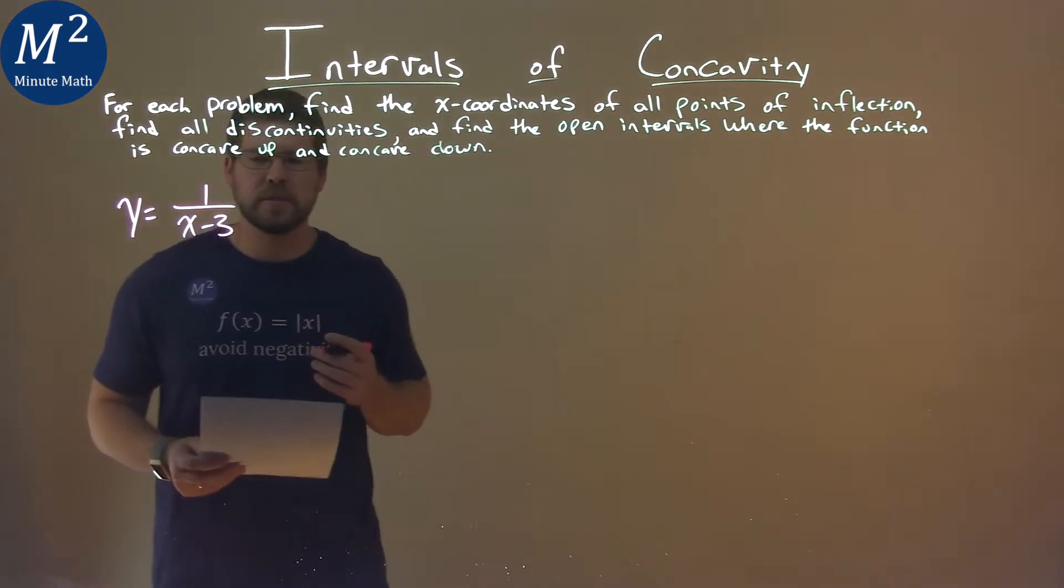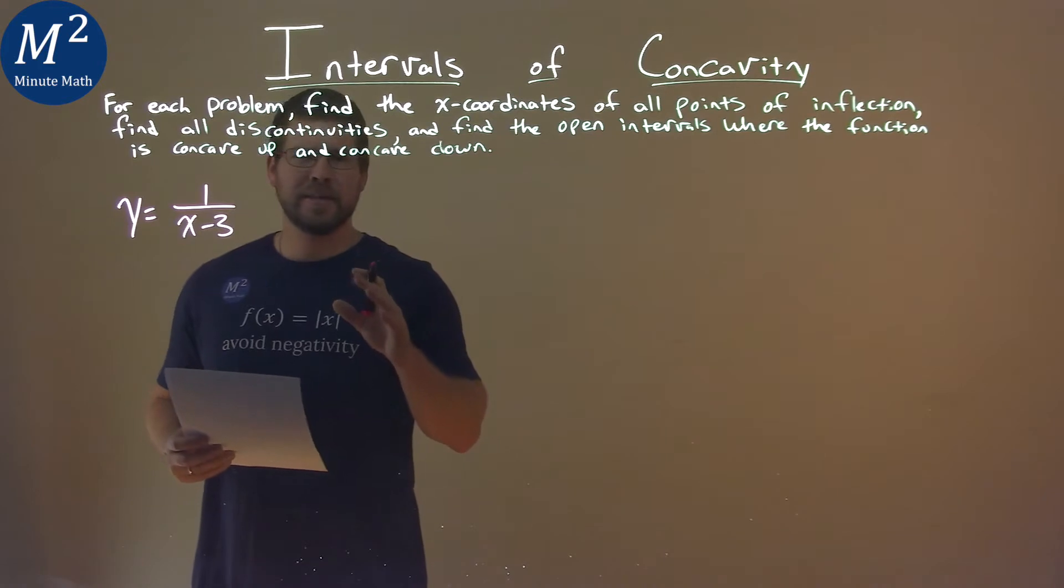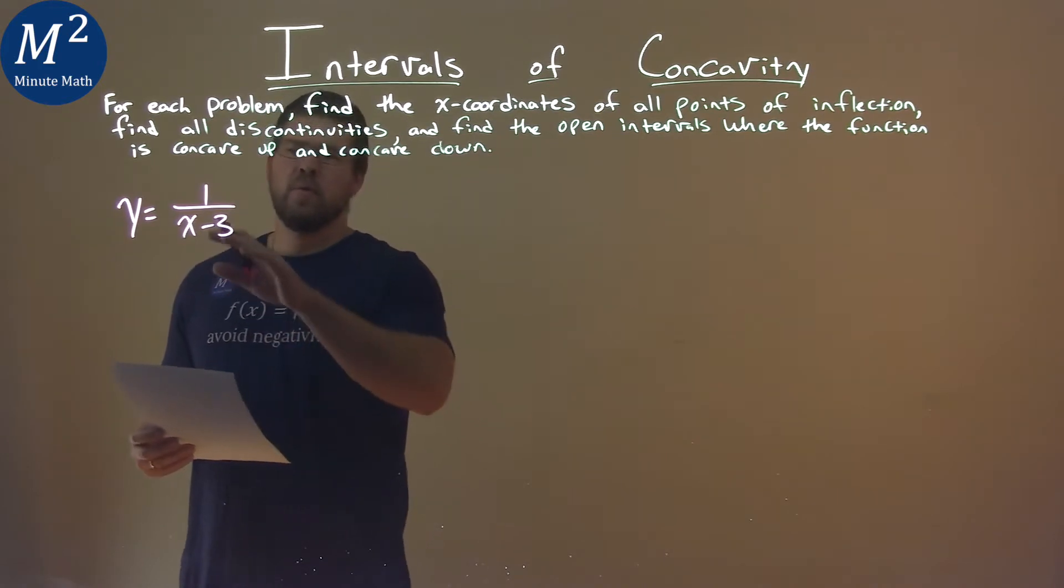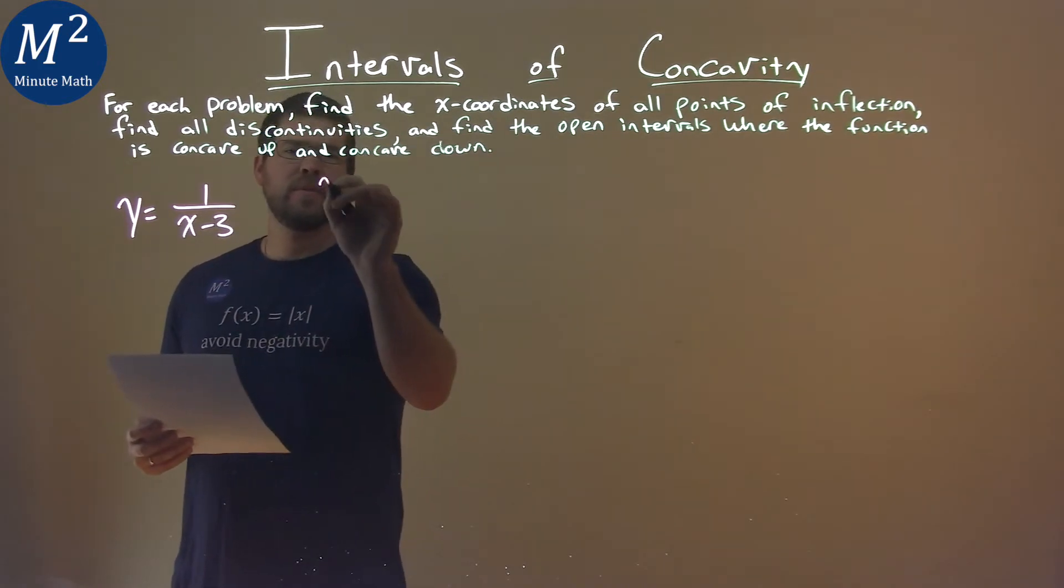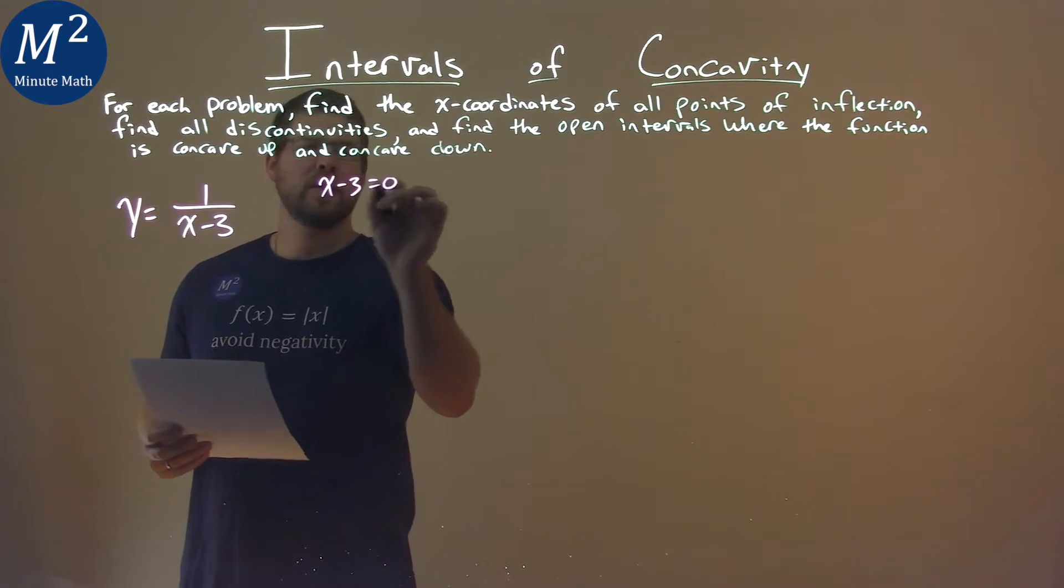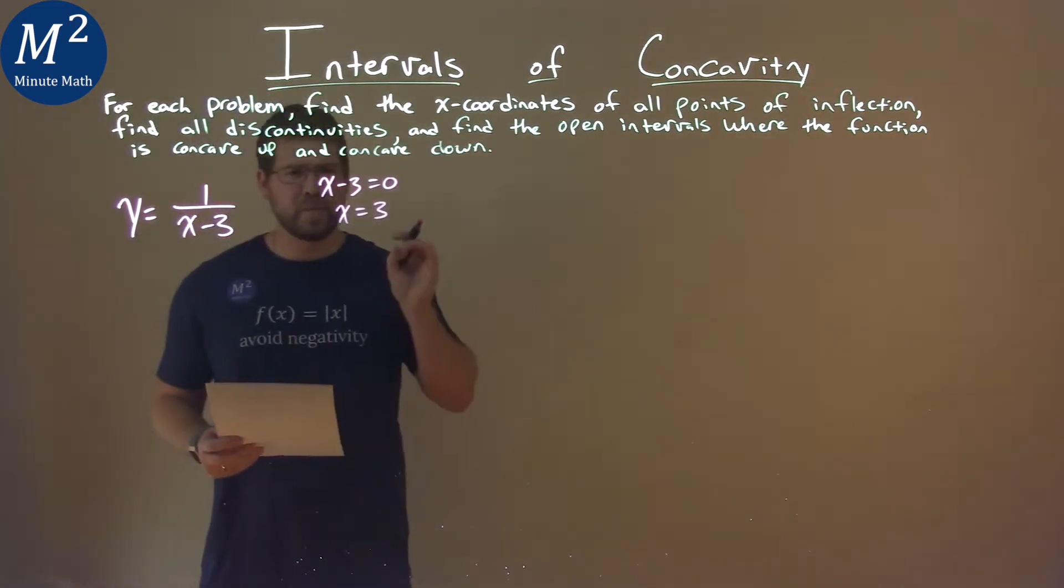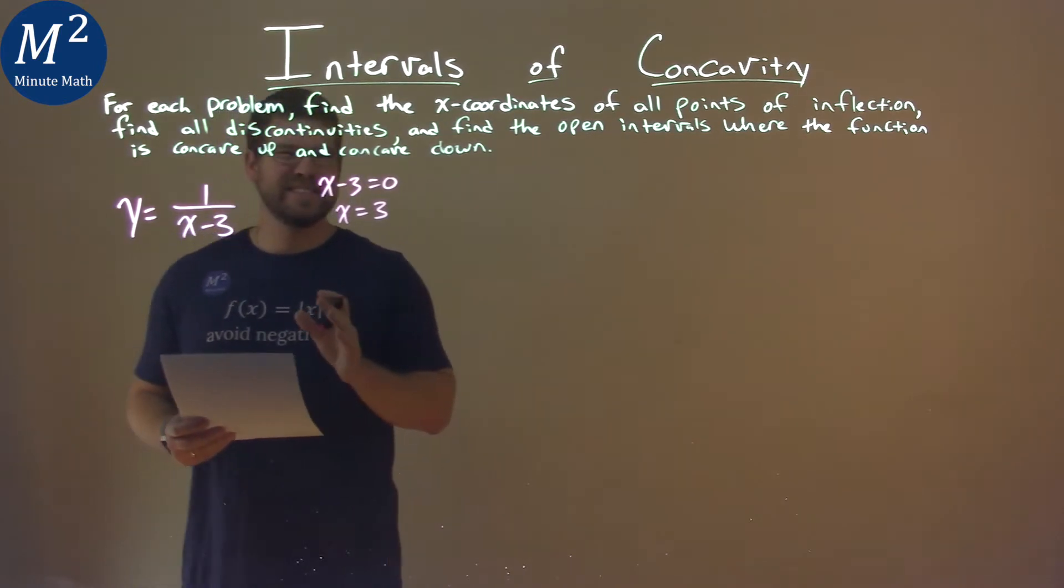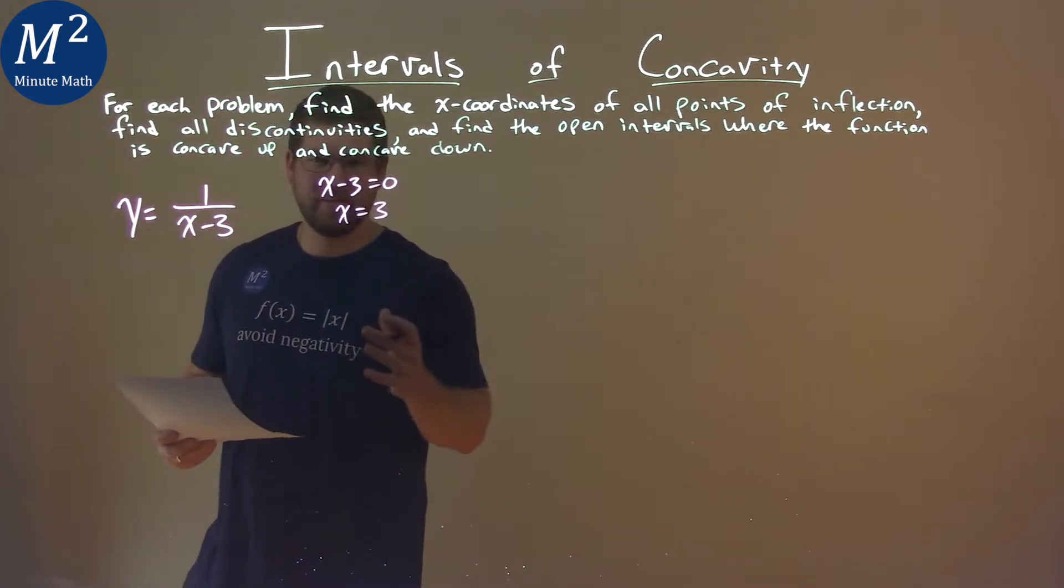Now, we have a rational function here, and the first thing I'm thinking about is where's that asymptote. Well, it happens when we're divided by zero, so I take my denominator, x minus 3, and set it equal to zero, and I have x equals positive 3. That's where our function is discontinuous, the only time it's discontinuous.